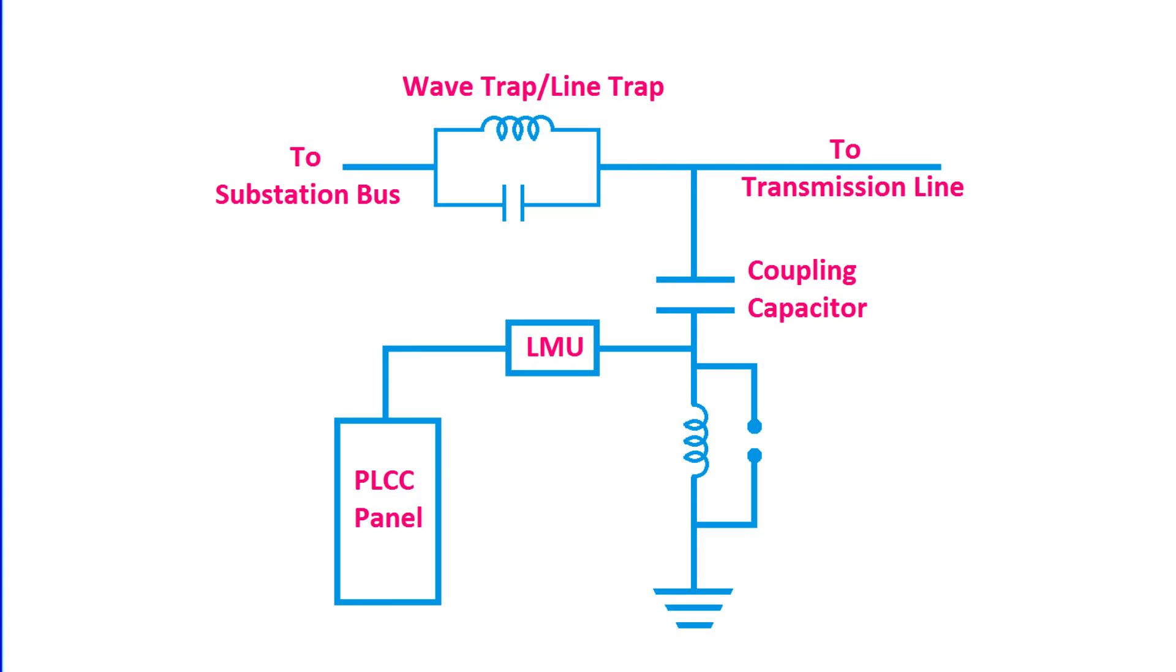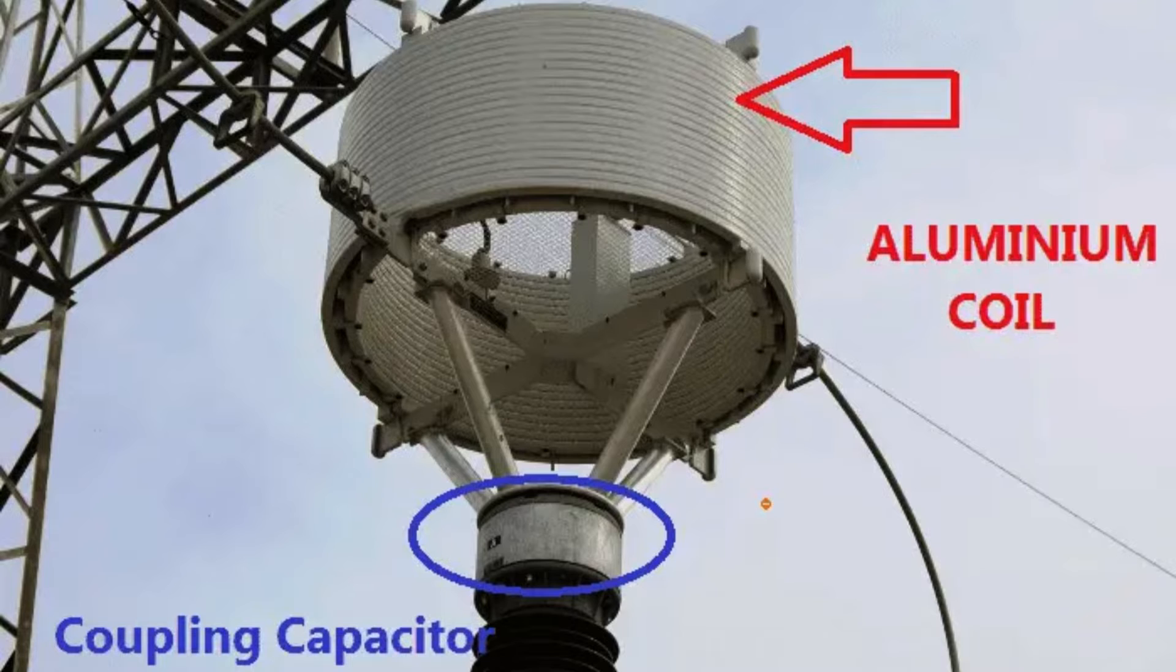This component, often the outer part of the wave trap circuit, is made from standard aluminum cable. It's designed to carry rated continuous power frequency currents, which means it requires a cooling duct to avoid overheating.